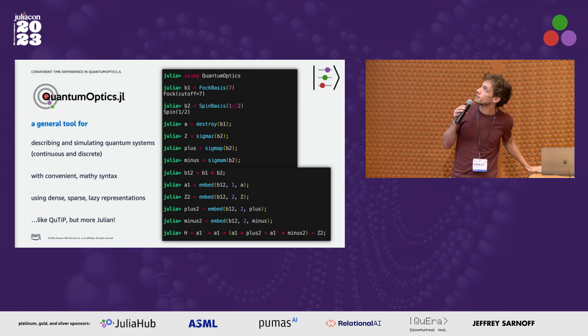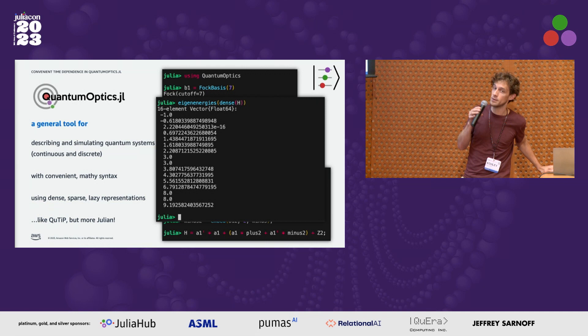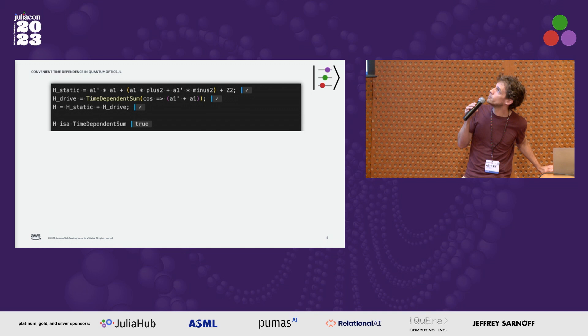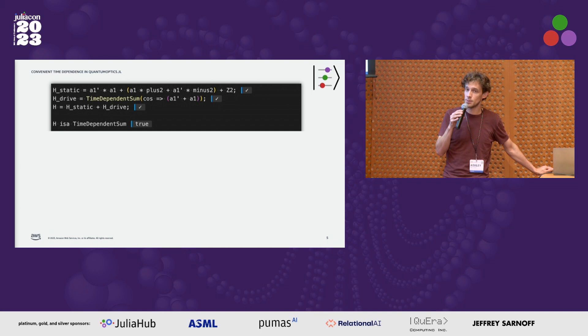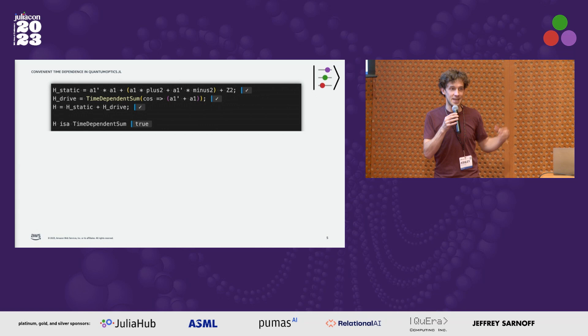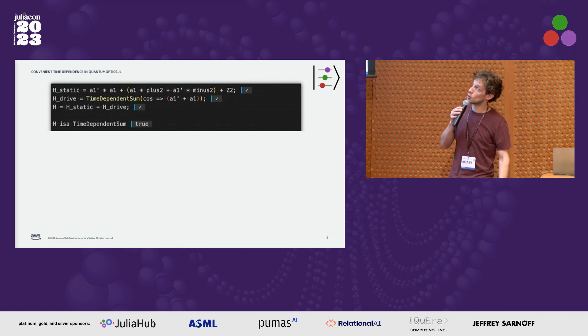You can do efficient simulations with it — for example, you can compute the eigenvalues of this Hamiltonian, which is often something we're interested in, to find out what the energy gaps in the system are. Now, what I want to talk about today is convenient time dependence in these systems. When we define a Hamiltonian for a system that we control and are building ourselves, we often do that by introducing time-dependent terms in the Hamiltonian to do a dynamical simulation. This might represent a laser being shot at your system or a microwave signal being sent into your processor.